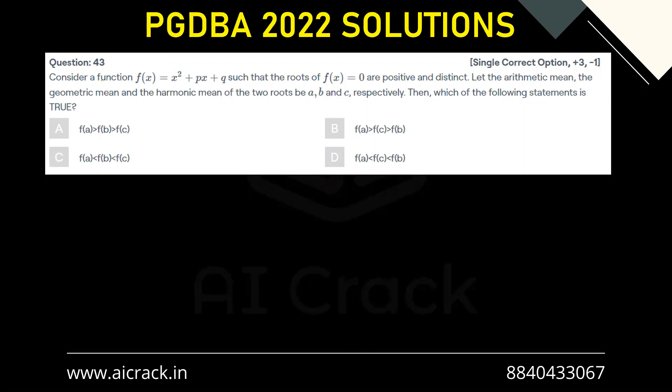Hi everyone, let's solve question number 43. Consider the function f(x) = x² + px + q such that the roots f(x) = 0 are positive and distinct. Let the arithmetic mean, the geometric mean, and the harmonic mean of the two roots be a, b, and c respectively. Then which of the following statements is true?